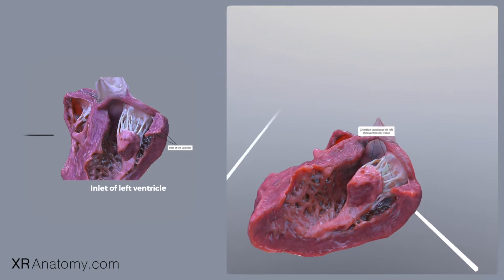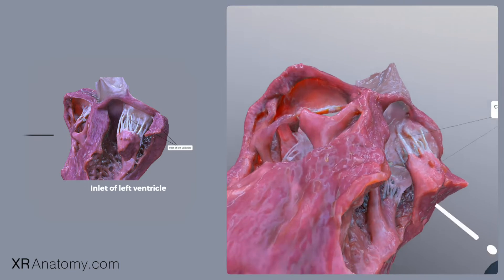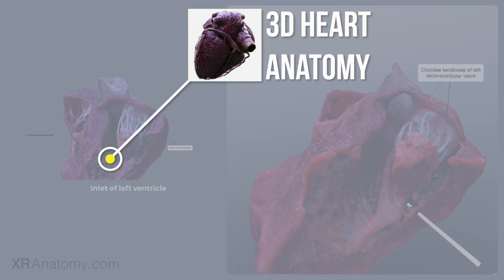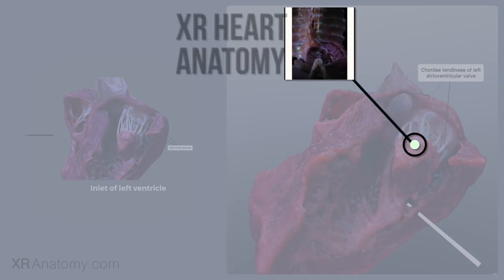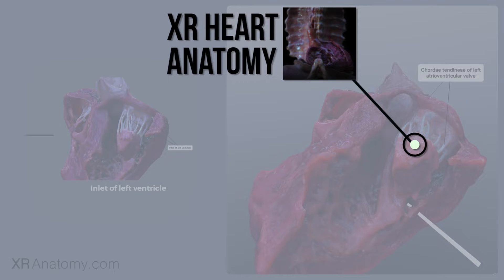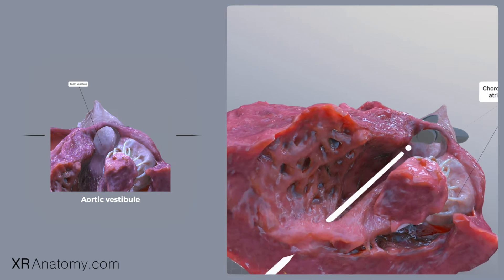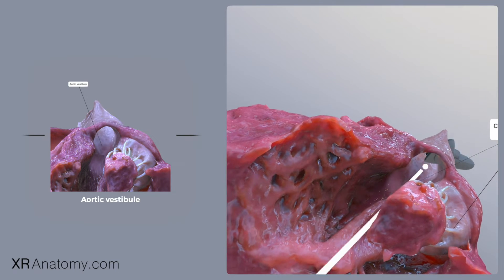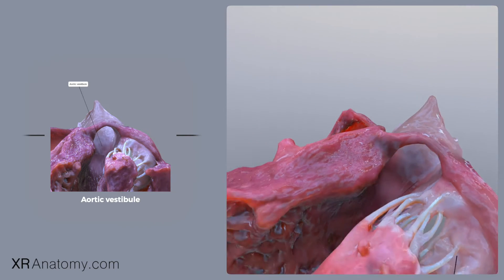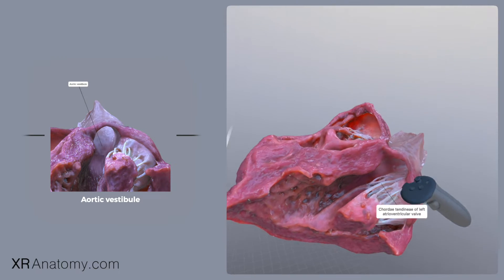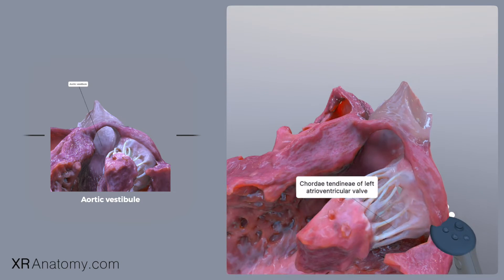The inlet portion is the area that contains the mitral valve apparatus. The outlet portion, sometimes called the aortic vestibule, is situated posterior to the right ventricle's infundibulum. It features smooth walls and serves as the outflow tract for the left ventricle.